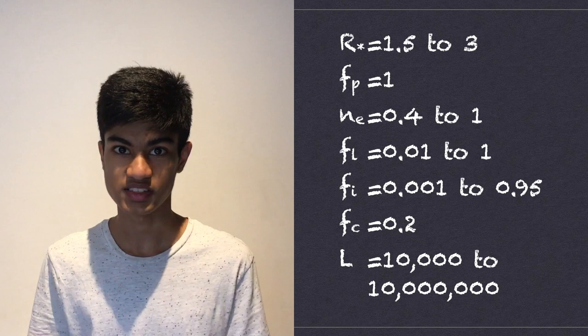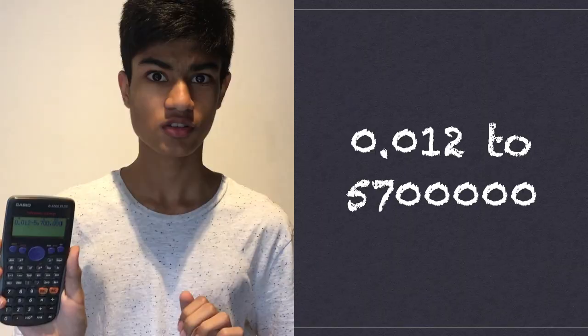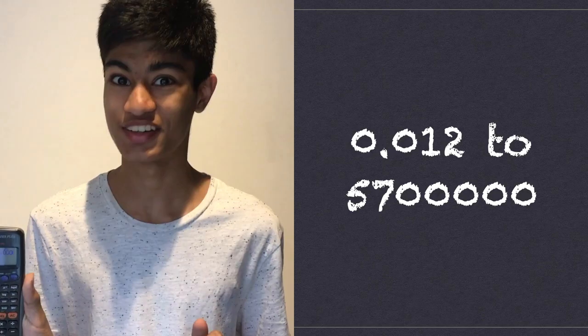Alright, finally we have all of our numbers. Let's multiply. So our final range, using a fairly conservative estimate, is 0.02 to 5.7 million. That really narrows things down, doesn't it?